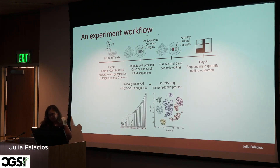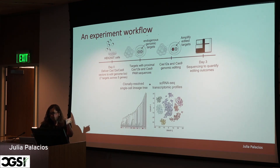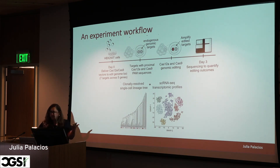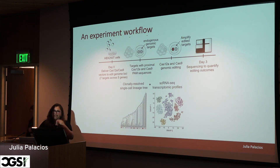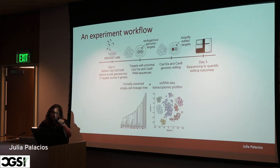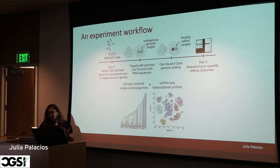You start with a single cell line of interest and then insert this artificial barcode that is not supposed to affect the natural evolution of the cell. Although some technologies are more toxic than others, they are not meant to be. It's supposed to be a completely artificial segment of DNA that does not alter the natural evolution or natural behavior of the cell.